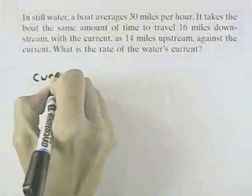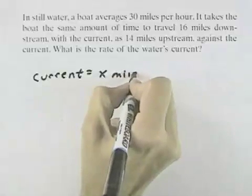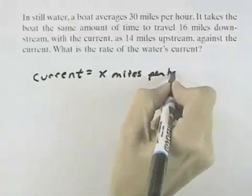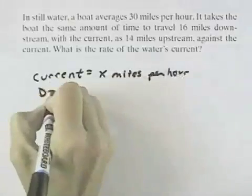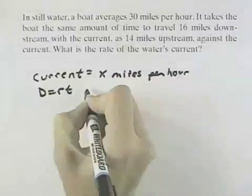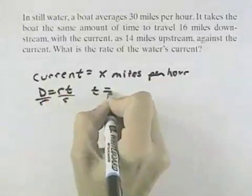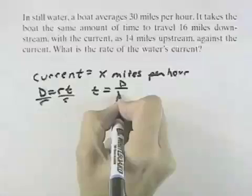Well, let's look at the current. That's our unknown, so that will be x miles per hour. We're talking about distance equals rate times time. However, because the time is what's going to be equal, I'm going to solve this for time by dividing by r, so I have time equals distance over rate.